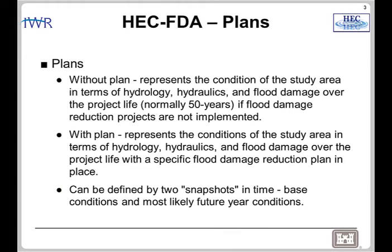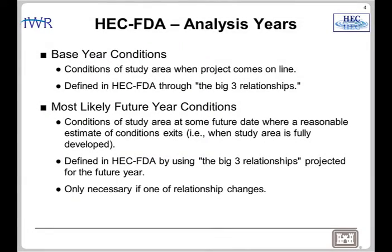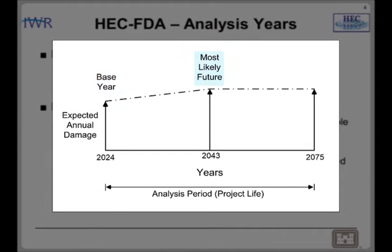In Workshop 4, you will analyze the Without Project Plan for the base year and the most likely future year — these are the two snapshots in time. The most likely future year is required because the Local Planning Agency of Beargrass Creek has made a 25-year growth projection of development. Therefore, the most likely future year is required so that you can stratify the new structures that won't be available to be damaged until 2043. Due to the projected growth development, two analysis years are required: the base year and the most likely future year.